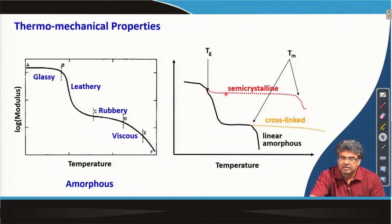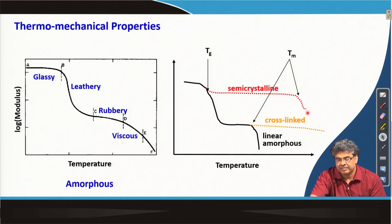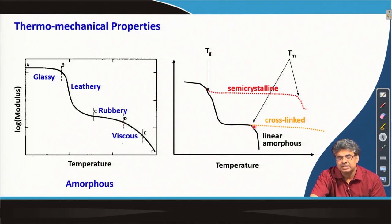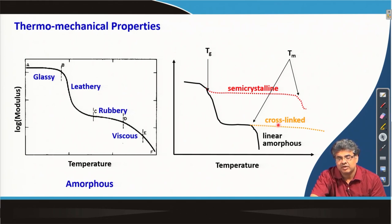The y-axis is log of modulus. The rigidity or strength is maintained until it reaches the melting point, after which the modulus decreases sharply and the polymer becomes a polymer melt. For a cross-linked polymer, after the rubbery region there is no further decrease in modulus — it remains slightly elevated. The modulus value remains elevated because flow of polymer molecules is restricted due to the presence of cross-links between polymer chains. For a linear amorphous polymer, the modulus will come down drastically after Tm.